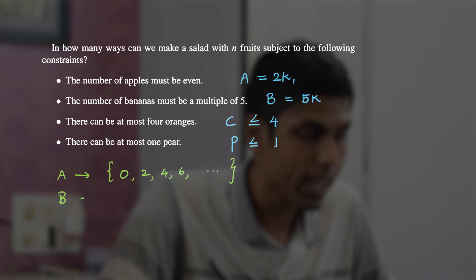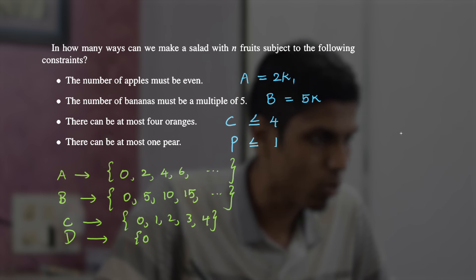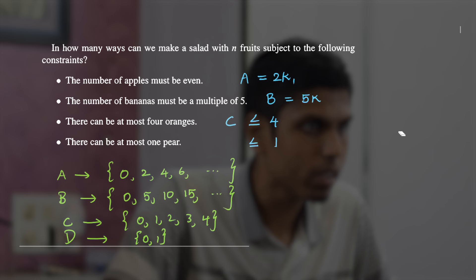But first, list down the possible values that A can take. A can take 0 because 0 is also an even number, 2, 4, 6, and so on. And the values that B can take is 0, 5, 10, 15, and so on. C can take 0, 1, 2, 3, and 4. And D can take 0. Let's rename the number of pears to be D instead.